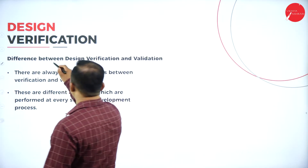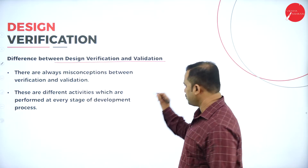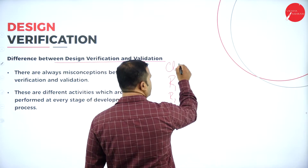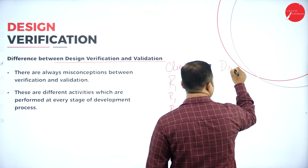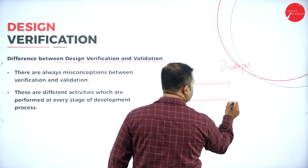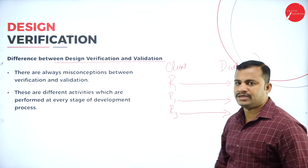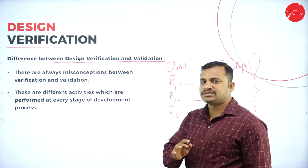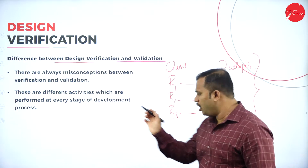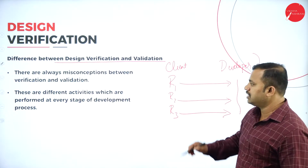There is a difference between design verification and design validation. Verification indicates whether requirements R1, R2, R3 of a client are met properly. These verifications are done by the developer as well as the testing team. Validation means whether all the requirements are met and working according to the requirements of the client — that is called validation.